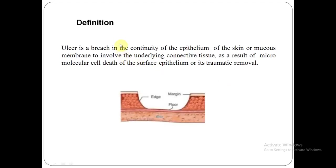Before we go to an apthous ulcer, let's see what's an ulcer. By definition, an ulcer is a breach in the continuity of the epithelium of the skin or the mucous membrane to involve the underlying connective tissue, as a result of micromolecular cell death of the surface epithelium or its traumatic removal.